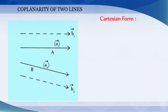In Cartesian form, let x1, y1, z1 and x2, y2, z2 be the coordinates of the points A and B respectively.